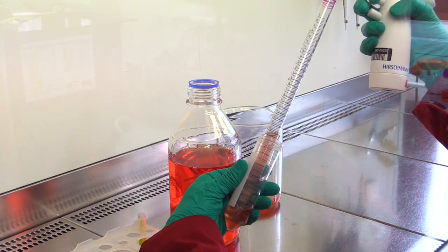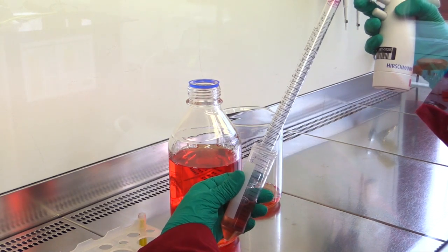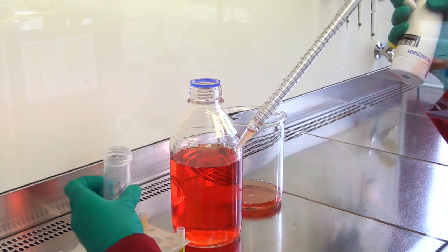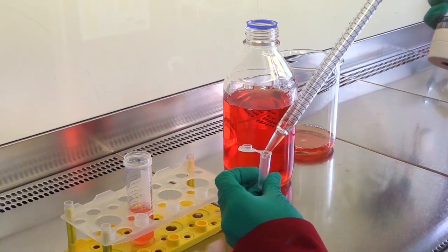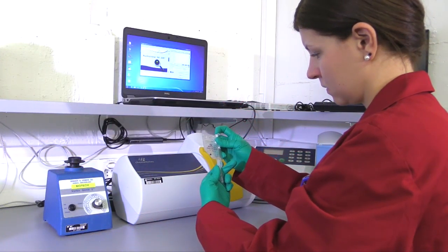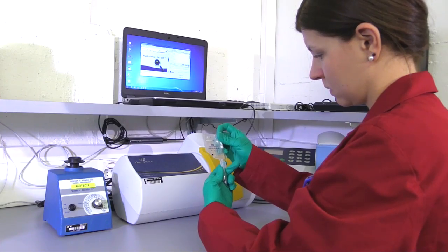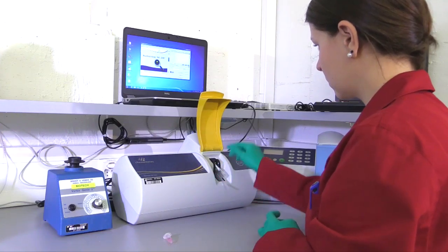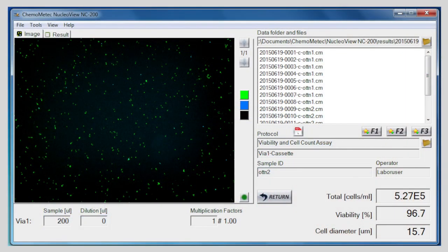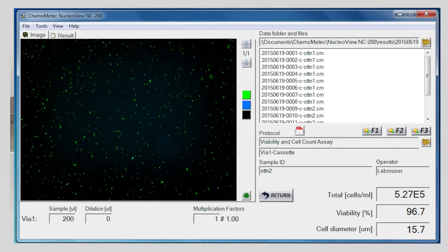A sample is taken from the well-mixed cell suspension in order to determine the cell density and viability. The cell counting is performed using the automated cell counting device, Nucleocounter. Afterwards, inoculation volume is calculated. In our case, to achieve sufficient cell growth, it is important to have around 3 times 10 to the power of 3 cells per centimeter square carrier surface and a cell viability above 95%.